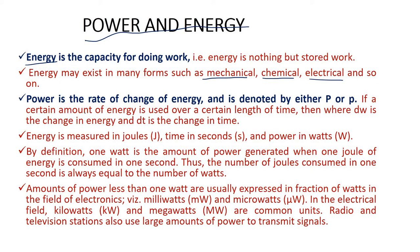What is power? Power is the rate of change of energy, denoted by P. If a certain amount of energy dW is used over a certain length of time dT, then power P = dW/dT. Energy is measured in joules and time in seconds, so power is joule per second, or watt. One watt is the amount of power generated when one joule of energy is consumed in one second.